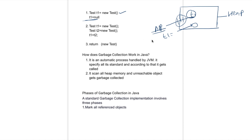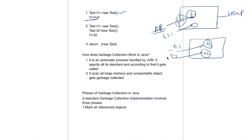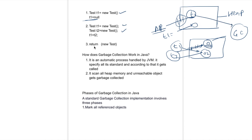Second scenario: you have created object O1 referenced by t1, then again you create object O2 and assign it to t1. Now you are removing the reference to your first object and assigning t1 to the second object. That means there is no reference to your first object, so this object is eligible for garbage collection.